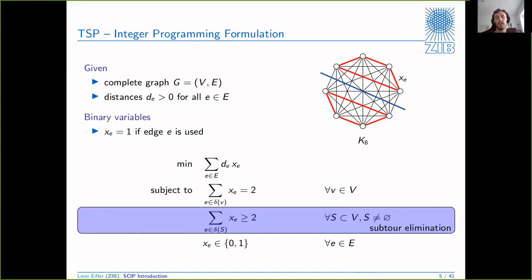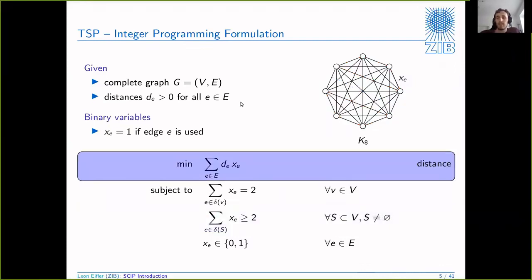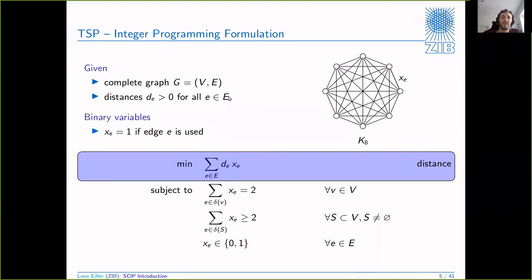You can see here where you have two subtours that are disjoint. To eliminate this you could put subtour elimination constraints that essentially say that whenever you have a cut in your graph, you need to have at least two edges in the tour crossing this cut, plus the objective function minimizing the distance. The disadvantage of this formulation is that there are exponentially many subtour elimination constraints, because you need one for each subset of the node set.